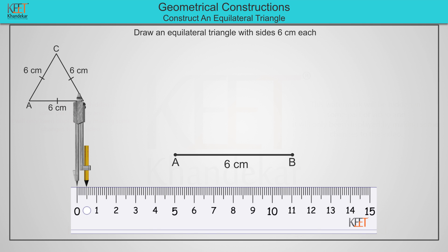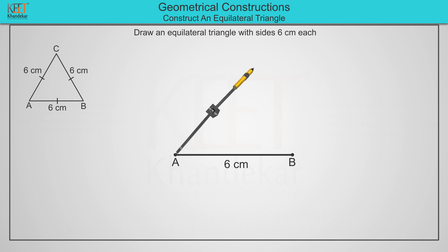Using compass, take 6 cm length on it. From the point A, mark an arc of 6 cm as shown on the screen. From the point B,